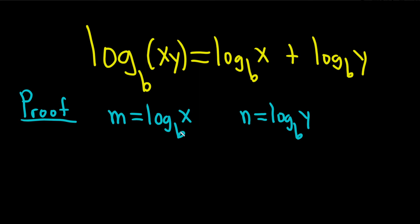So here the base is b. Remember it's b to the m equals x, and b to the n equals y. So b to the m equals x, and b to the n equals y.